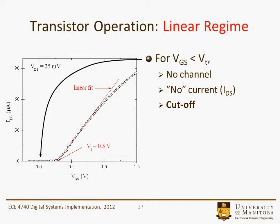First we'll discuss the linear region in a little bit of detail. Actually, before that — when VGS is less than the threshold voltage, no channel is formed, so there's effectively no current IDS, and it's in the cutoff mode. That's where that's illustrated on that figure.